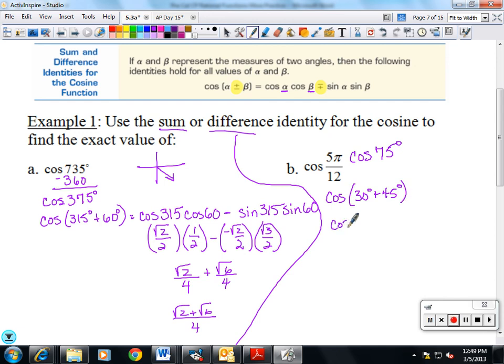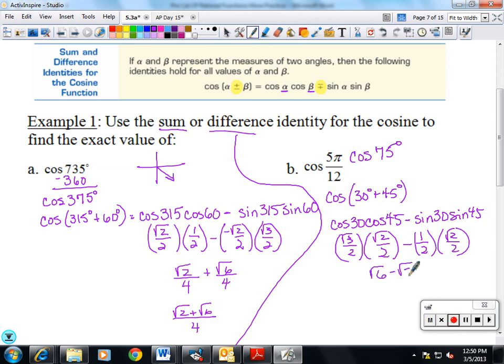So that's going to be cosine of 30 cosine of 45 minus sine of 30 sine of 45. Cosine of 30 is the square root of 3 over 2. Cosine of 45, square root of 2 over 2. Sin of 30, 1 half. Sin of 45, square root of 2 over 2. So that's going to be the square root of 6 minus the square root of 2 over 4.